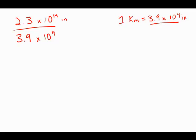So I'm going to estimate 2.3, that's pretty close to 2. 3.9, that's pretty close to 4. So I'm going to do 2 times 10 to the 14th over 4 times 10 to the 4th.